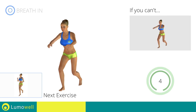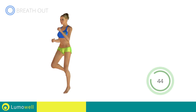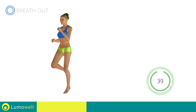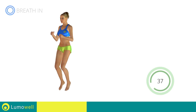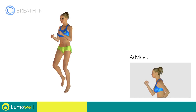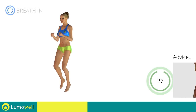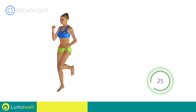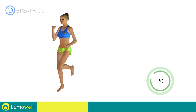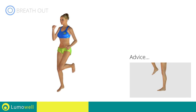Next exercise: butt kick run. Go! Do not bend or curve your back — maintain your torso straight by staring at a fixed point in front of you while contracting your abdominals. Do not rest your heels on the ground — finish the descent on your toes.